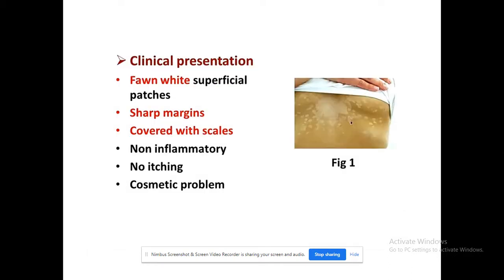The clinical presentation of tinea versicolor: fawn or white superficial patches appear on the skin with sharp margins between patches. They may be covered with scales but there is no inflammation and no itching. It is purely a cosmetic problem. As shown in the figure, you can see these kinds of patches due to this infection — they will not harm you, but they are visible on the skin surface.